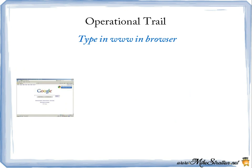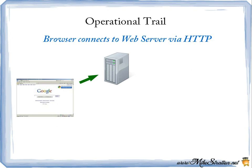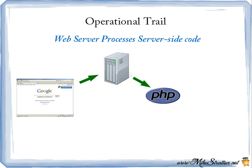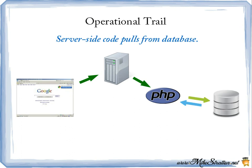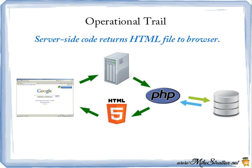Next, we'll discuss the operational trial — the method by which any web browser connects to a website. Using the LAMP stack as our example: you type in www.anywebsite.com in your browser. The browser connects to a web server via the HTTP protocol. The web server then calls upon the PHP code. The PHP code then calls to the relevant databases or database tables, and returns the result in the form of HTML, which is then returned to the browser. And voila, your website is now in plain view.